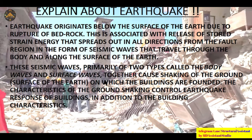In a nutshell, the earthquake originates below the surface of the earth with rupture of the bedrock. Energy is released from the bedrock and transfers to buildings, causing damage. The release of stored strain energy spreads out in all directions from the fault area in the form of seismic waves that travel through the body and along the surface of the earth. There are two types of earthquake waves: body waves and surface waves, which together cause shaking of the ground surface on which buildings are founded.